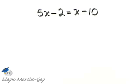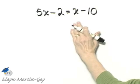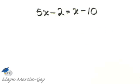Now we're going to use the addition property, and we want to rewrite this equation so that we have variable terms on one side of the equation, constants on the other. I'll move variable terms to the left, constants to the right.